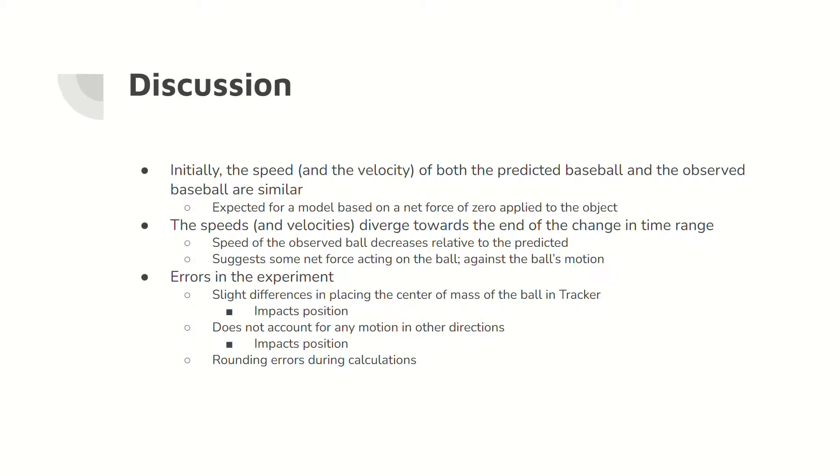Possible errors in the experiment include slight differences in measuring the center of the baseball in tracker and the non-consideration of movement in other directions, which would distort the perceived change in position and impact the calculated velocity. Rounding errors in calculations are also considered.